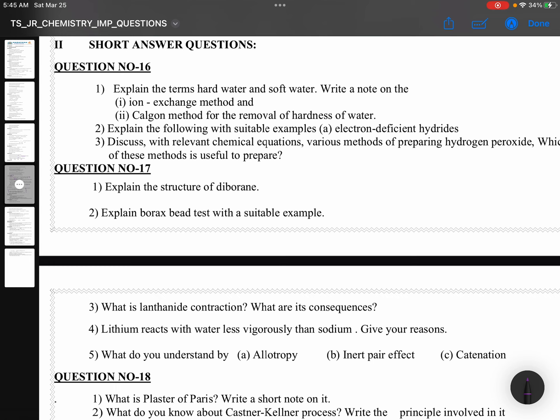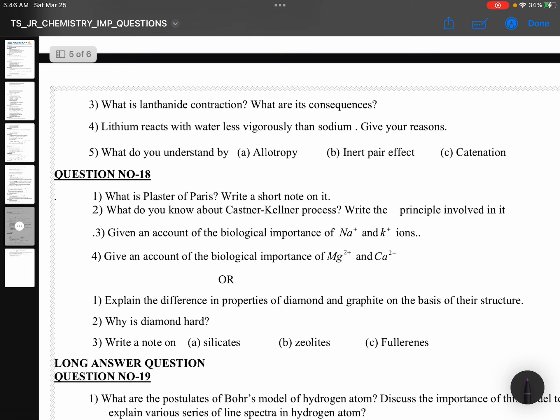Sixteenth question: Soft water and hard water. Ion exchange method, Calgon method. Electron deficient hydrides. Hydrogen peroxide preparation and properties. Seventeenth one: Diborane structure. Borax bead test. Lanthanide contraction. Sodium and lithium. What do you understand by allotropy, inert pair effect, catenation.